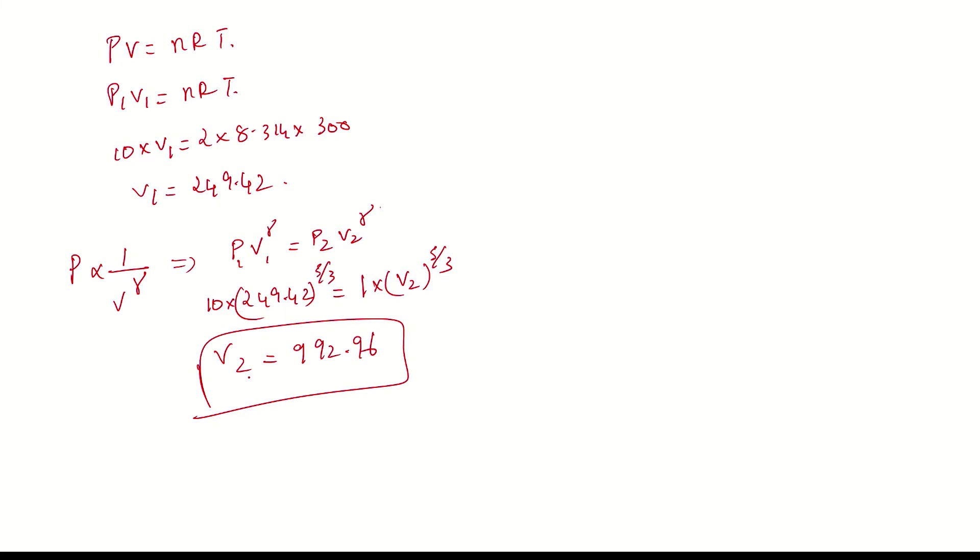Now, we calculate the work done in adiabatic expansion using the formula W = (P₁V₁ - P₂V₂)/(γ - 1). So, W = (10 × 249.42 - 1 × 992.96)/(5/3 - 1) = (2494.2 - 992.96)/(2/3) = 2252 Joules.